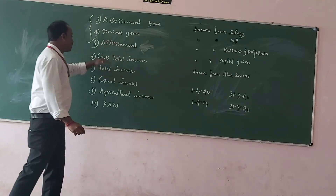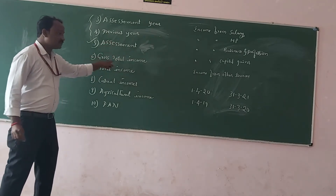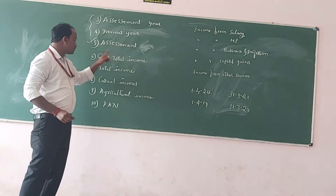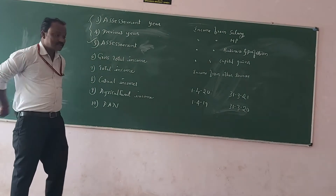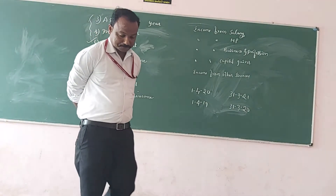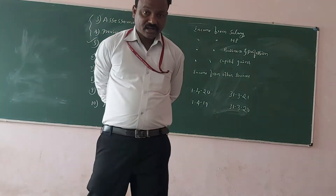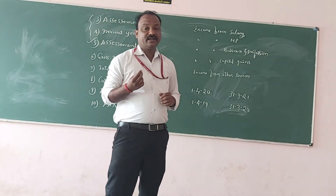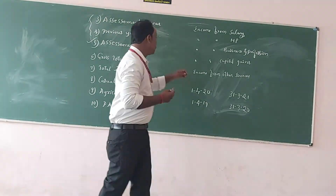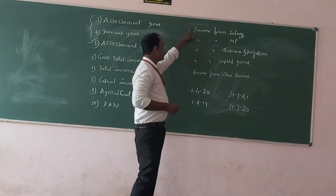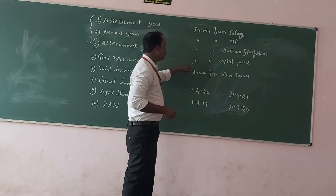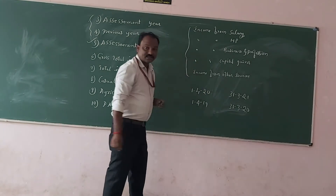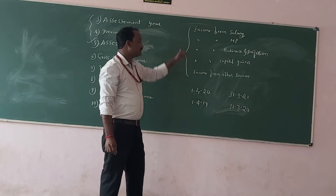After this, the next term is gross total income, and after that total income. First, let us understand what is gross total income. Assessees earn income from five sources: source number one, two, three, four, and five. In my previous class, I discussed these five sources.